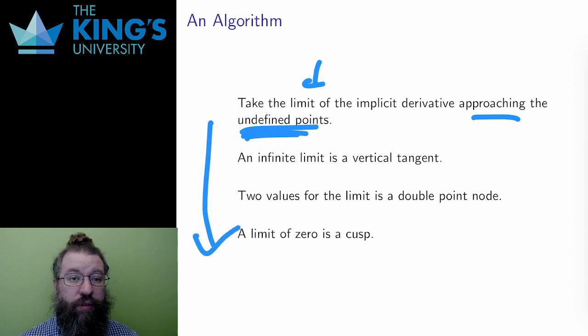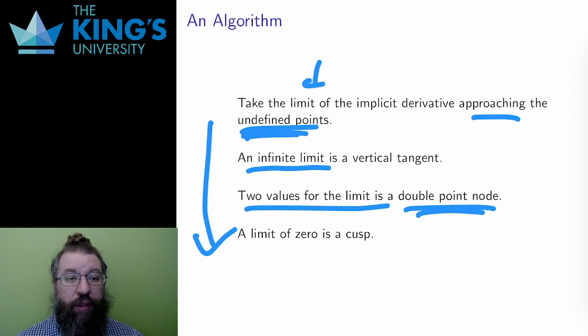There are three cases. If the limit is plus or minus infinity, there is a vertical tangent. The limit going to infinity means that the slope is getting steeper and steeper, and in the limit, getting steeper and steeper indicates going towards a vertical tangent. If there are two values for the limit, due to the plus or minus from the substitution, then it is a double point node. The two values indicate the two slopes of the two components that intersect at the node.